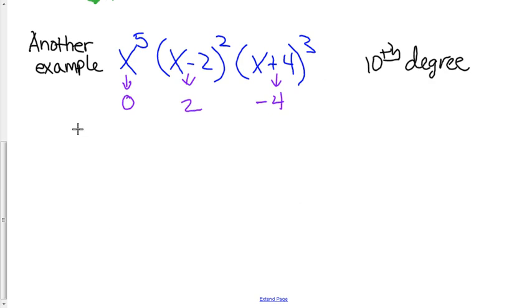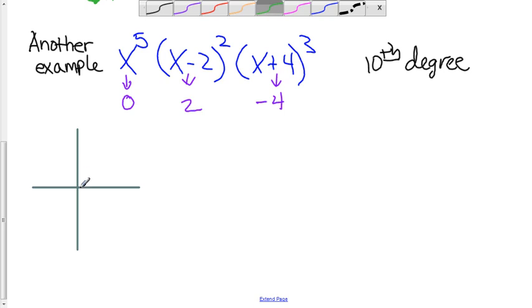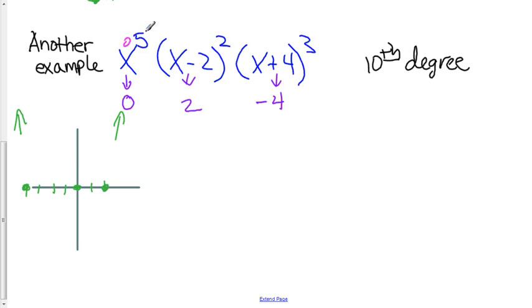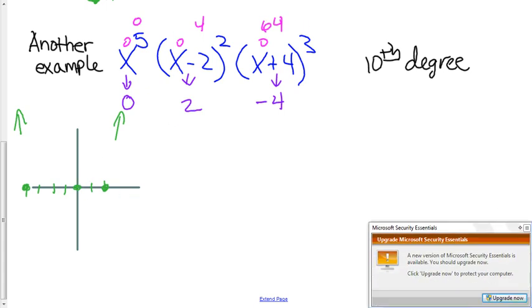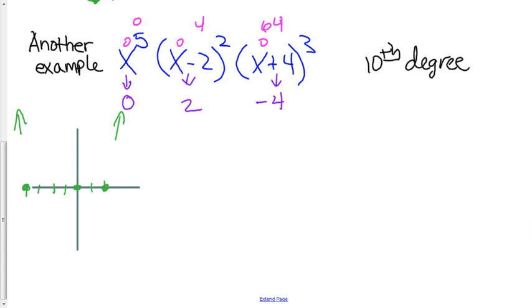We know it crosses at 0, positive 2, and a negative 4. Since it's a tenth degree both ends go up. And if you substitute 0 into this, that's 4 and 4 cubed is 64, that's 2 and 2 squared is 4, and that's 0 and 0 times all that's 0, so it crosses the y-axis at 0.